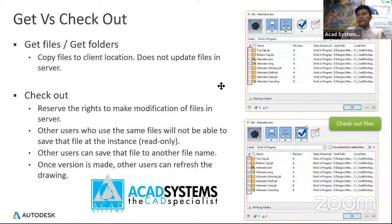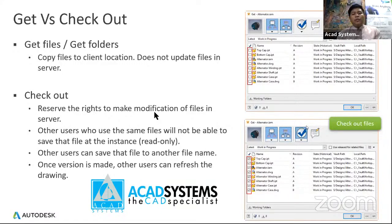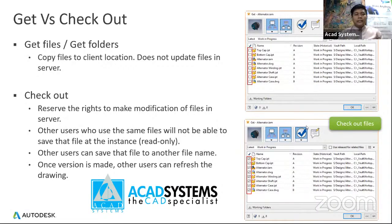Get versus checkout — what's the difference? When you 'get' a file, you copy it directly to your local drive and save edits locally. But with 'checkout', the file stays stored at the server folder, and any changes are reflected on the server file itself. That is the difference between get and checkout in Vault.